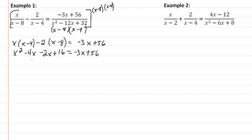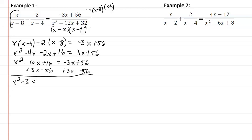We'll move everything over. So we have x squared minus 6x plus 16 equal to negative 3x plus 56. We'll move everything over and that's going to give us x squared minus 3x minus looks like 40.